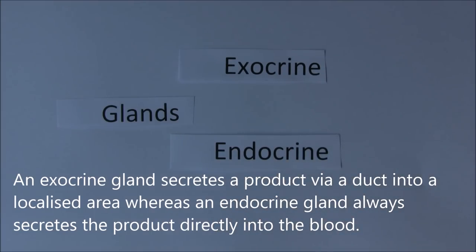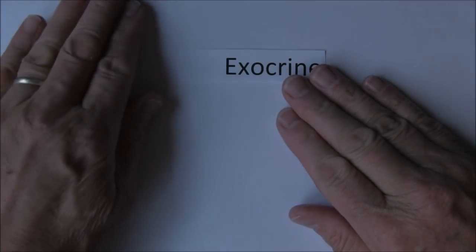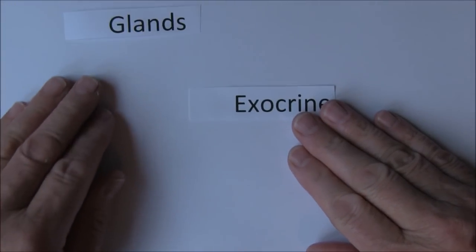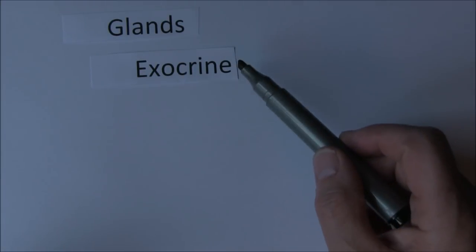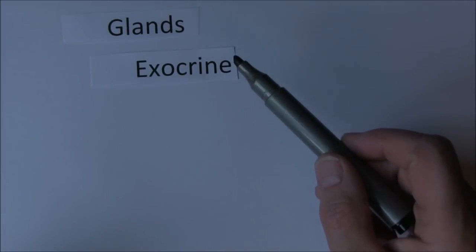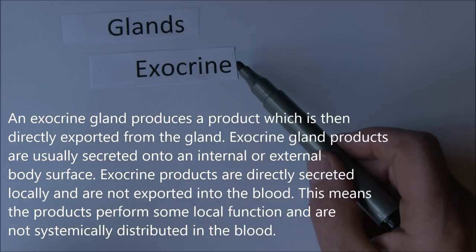First of all we want to think about what these two types of glands do, starting with exocrine glands. An exocrine gland is something that produces a product and secretes it via a duct, or secretes it onto a surface.